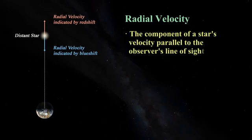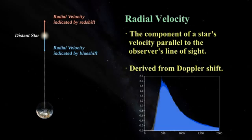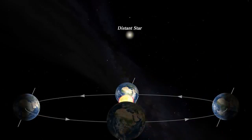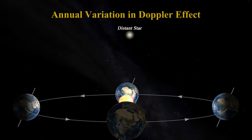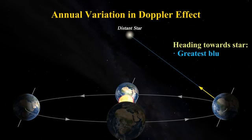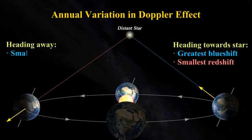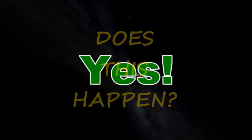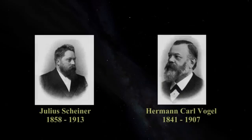Stars behave like black bodies and emit radiation at a broad range of frequencies, so to identify Doppler shift, markers are needed — and fortunately absorption lines in the spectra serve this purpose. Since Earth is orbiting the sun, we should expect variation in wavelength shift for stars throughout the year: greatest blueshift when heading towards a star, greatest redshift when heading away, with intermediate measurements in between, repeating on an annual basis. And it does. This was observed in 1887 by Hermann Vogel and Julius Scheiner.